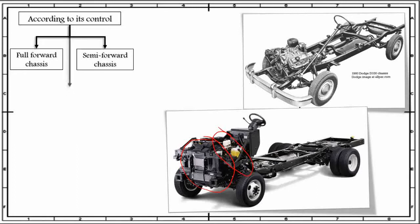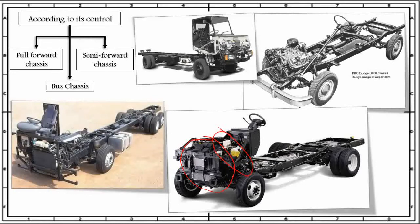The third classification according to its control is the bus chassis. In this type, the engine is fitted inside the driver cabin. Therefore, the extra space of the chassis can be utilized to increase floor area to accommodate extra seats. These chassis also allow the driver to see the road just in front of the front wheel, making driving easier and trouble-free compared to full forward chassis. An example of bus chassis is shown in this figure — the engine is fitted in the driver cabin right beside the driver.